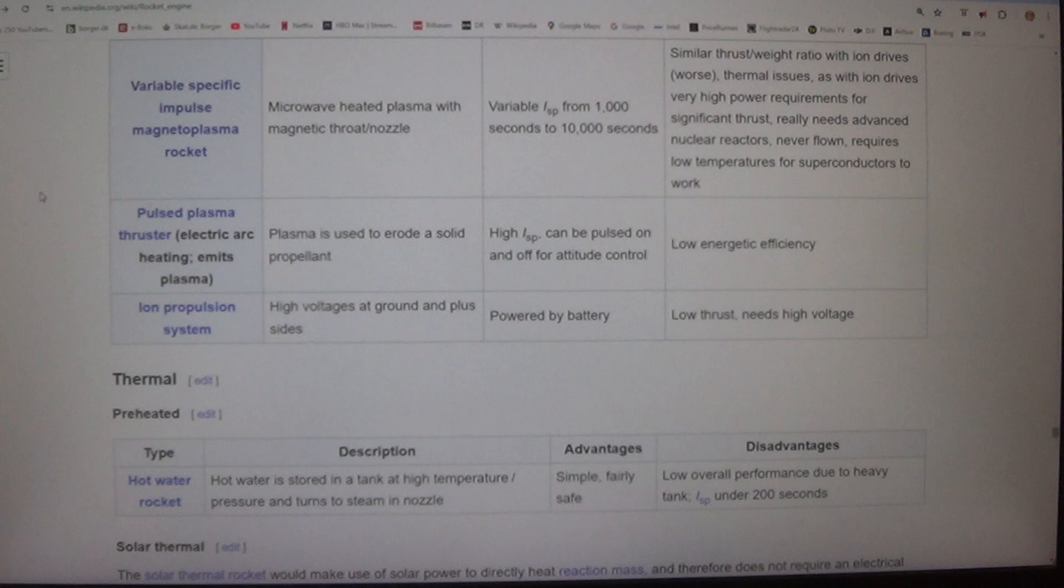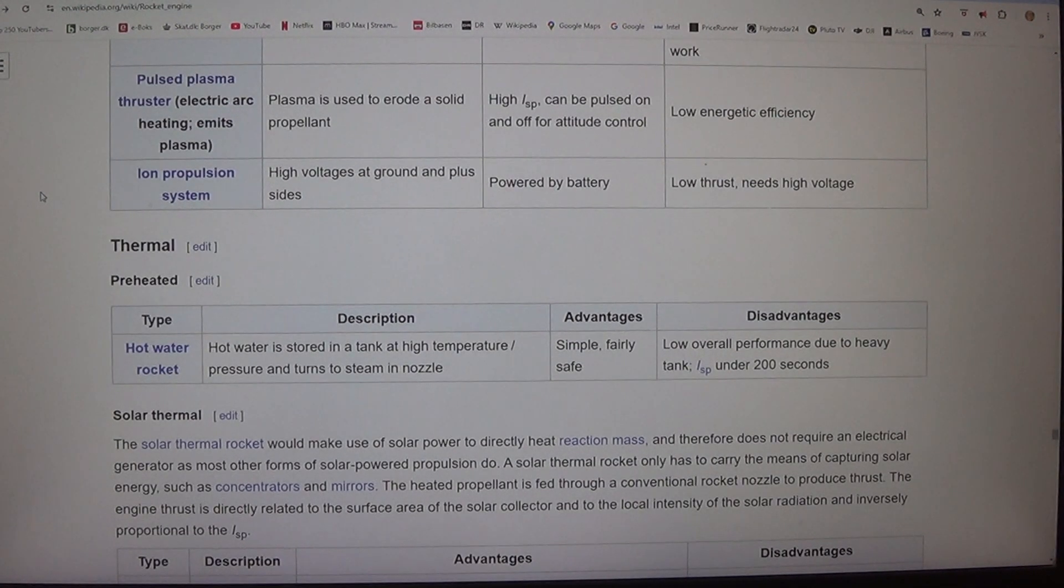Ion propulsion system - high voltages at ground and positive sides powered by battery. Low thrust. Needs high voltage.